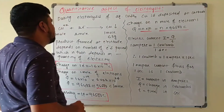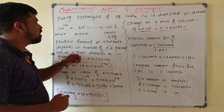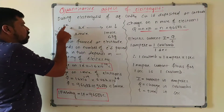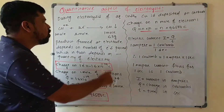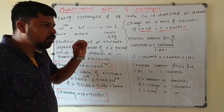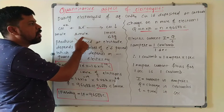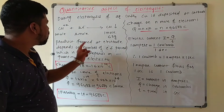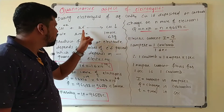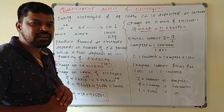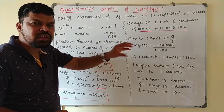During the electrolysis of aqueous copper sulfate solution, copper is deposited at the cathode. The charge on copper is +2. Each one mole of Cu²⁺ ions gains two moles of electrons so that one mole of copper is deposited. The product formed at the cathode or anode depends on the number of electrons passed through the electrolytic solution, which in turn depends on the quantity of electricity.